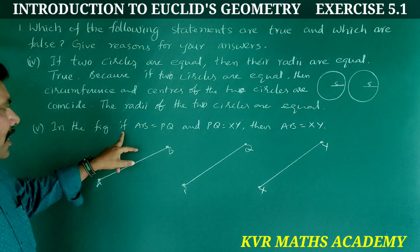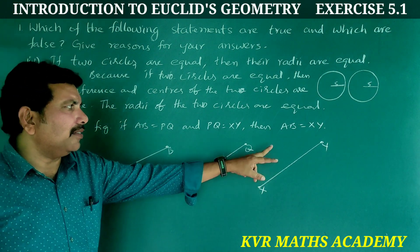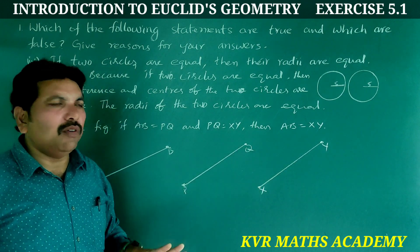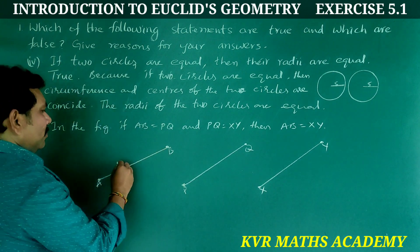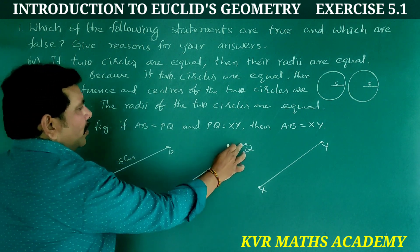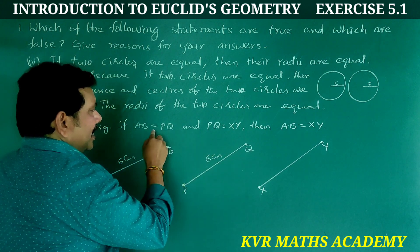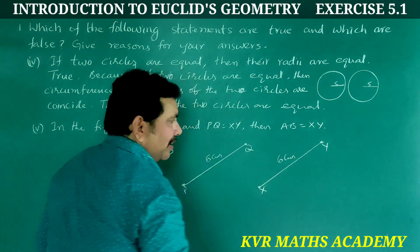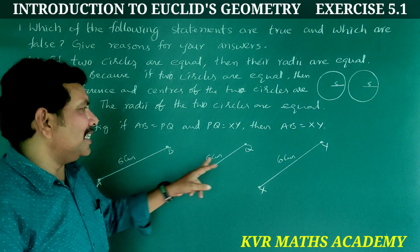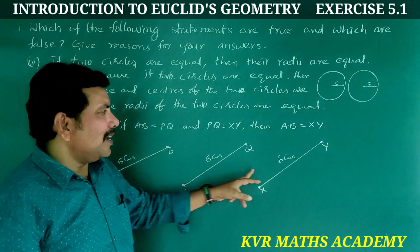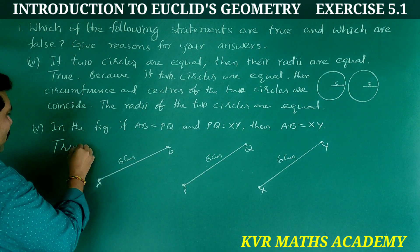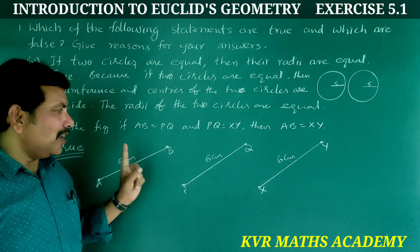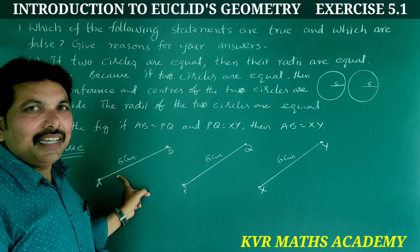Fifth statement: If AB equals PQ and PQ equals XY, then AB equals XY. According to Euclid's Axiom 1, things which are equal to the same thing are also equal to one another. So the given statement is true.